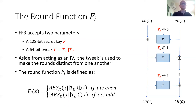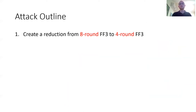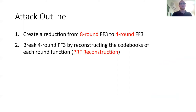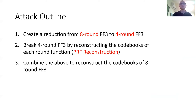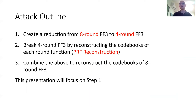Our attack has three parts. First, we will create a reduction from eight-round FF3 to four-round FF3. Then we will break four-round FF3 by reconstructing the codebooks of each individual round function using a subroutine that we will call PRF reconstruction. Lastly, we will simply combine the above two steps in order to reconstruct the codebooks of all eight rounds of FF3. In this presentation, we only have time to focus on the first step, meaning the reduction to four rounds. Therefore, we will assume that we know the algorithm that we call PRF reconstruction, which accepts plaintext-ciphertext pairs for four-round FF3 and returns the round functions.